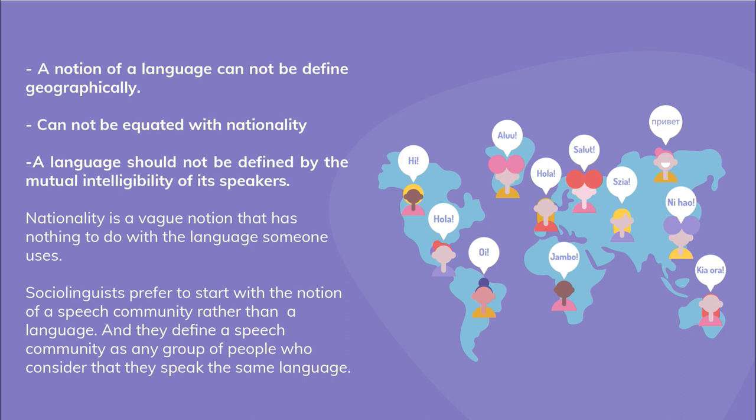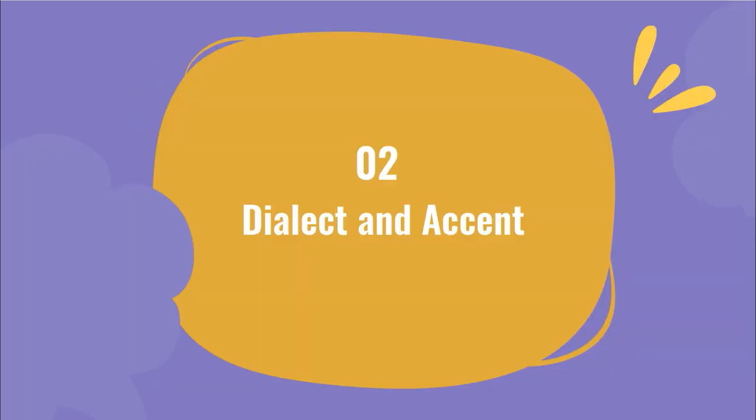Many Russian Jews, for example, consider themselves Jewish but speak Russian. And like a Dutchman and a German who are considered to speak distinct languages, there are no objective linguistic criteria that can be applied — Dutch and German are structurally alike. Faced with this dilemma, sociolinguists prefer to start with the notion of a speech community rather than a language, and they define a speech community as any group of people who consider that they speak the same language.